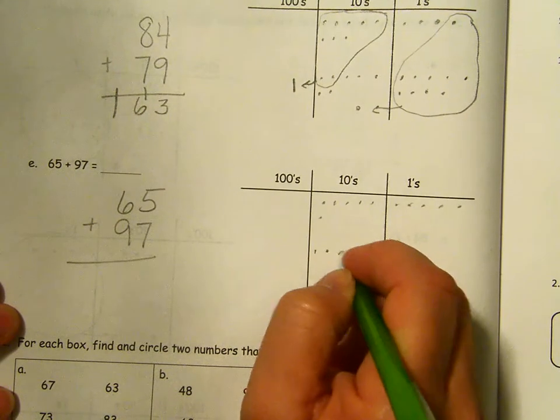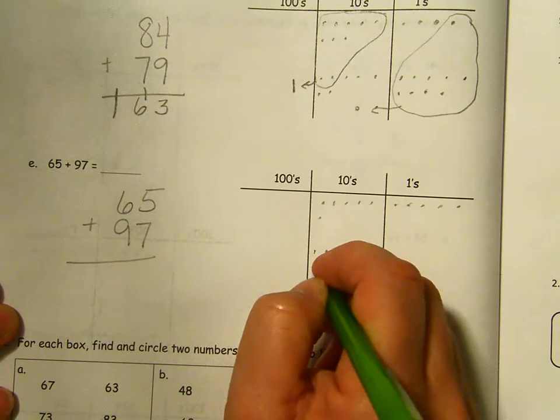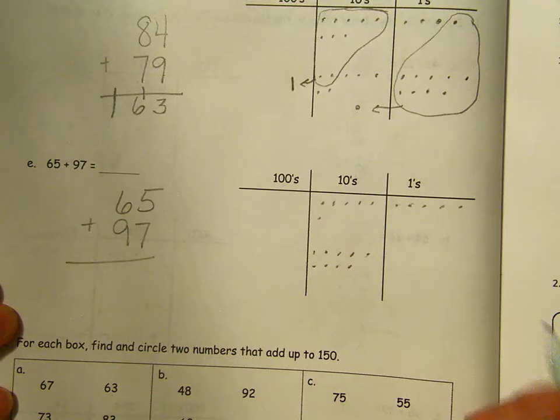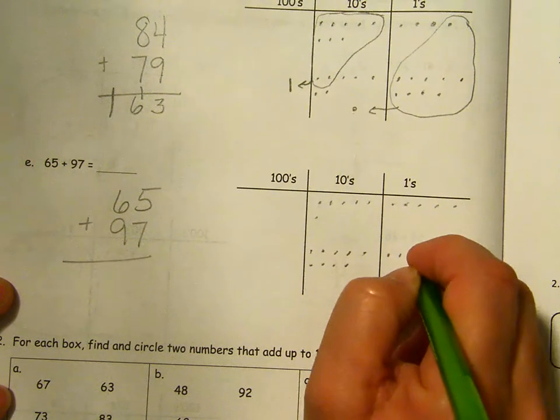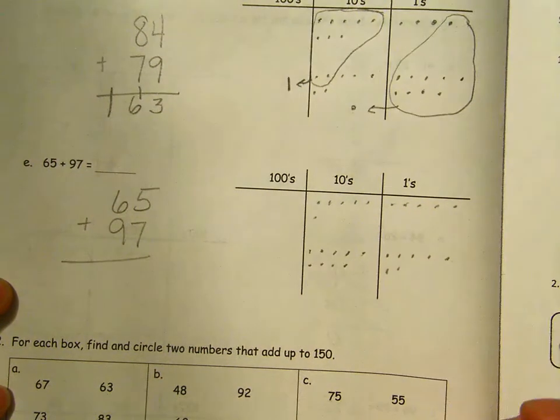One, two, three, four, five, six. One, two, three, four, five. Nine tens and seven ones. One, two, three, four, five, six, seven, eight, nine. And seven ones. One, two, three, four, five, six, seven.